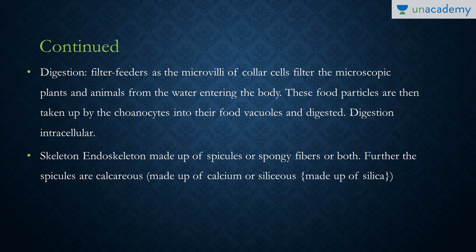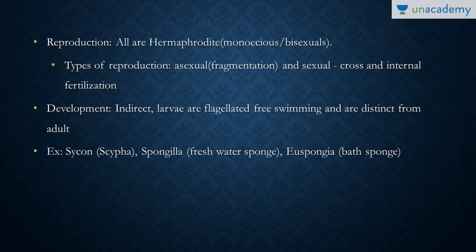Regarding reproduction: all sponges are hermaphrodites, meaning they are bisexual — a single organism has both male and female sex organs. They may also have asexual reproduction in the form of fragmentation. Sexual reproduction involves cross-fertilization, and fertilization is internal. Development is indirect, meaning larval stages are formed, which are flagellated and free-swimming.